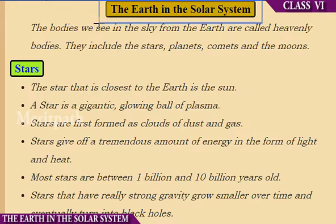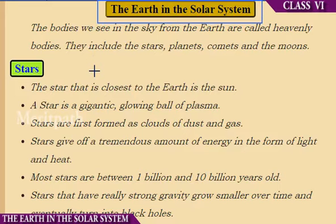The Earth in the Solar System. In this chapter we will cover the following topics: celestial bodies, stars and planets, and the solar system. Let's start a journey with the celestial bodies — the Sun, the Moon, planets, stars, and other bodies.